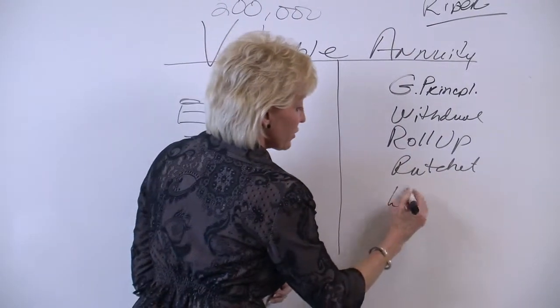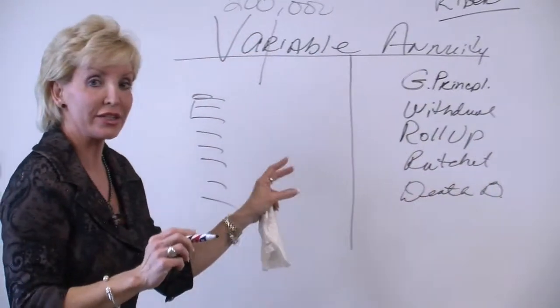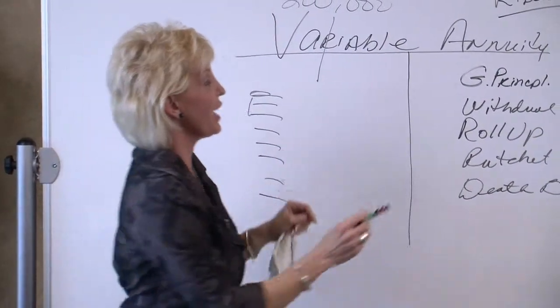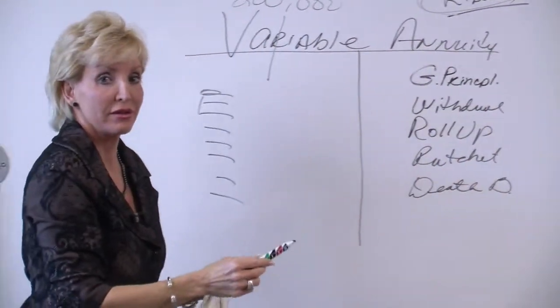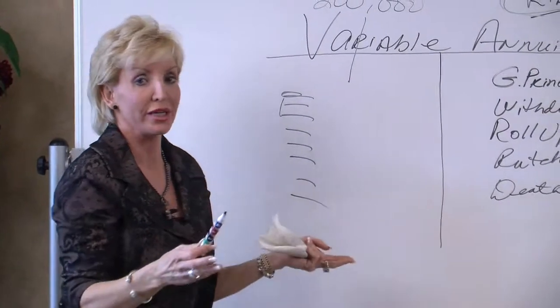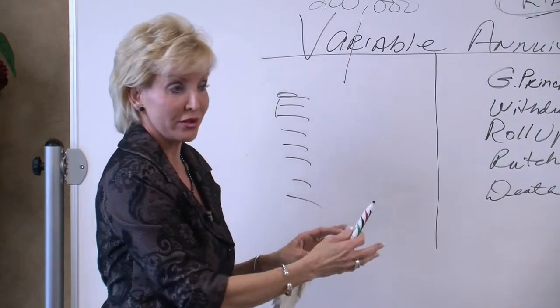And there's death benefit riders. But if you want to have any guarantees in a variable annuity, you're going to have to add a rider to it. And for each rider, there's a cost. Now in an indexed annuity, it's just already guaranteed. So this is the difference in a variable annuity and an indexed annuity.